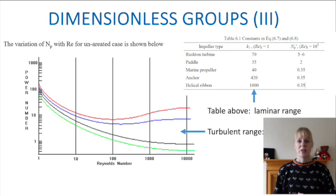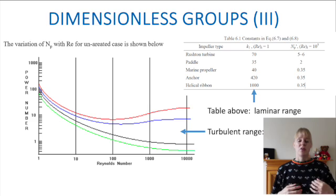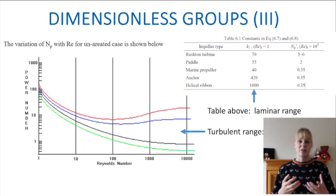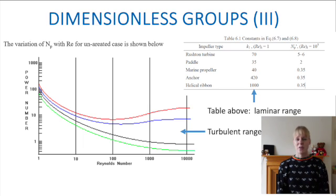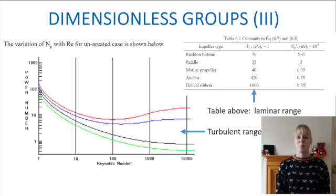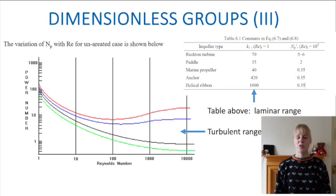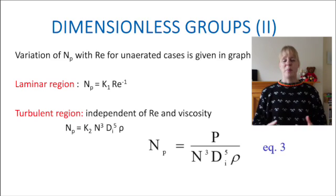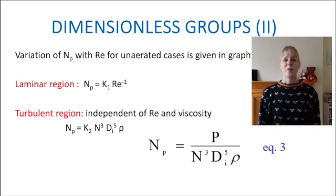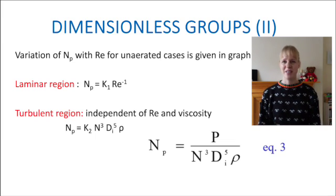The power number enables you to determine the oxygen transfer rate in your system and the oxygen uptake rate of your culture — essentially letting you calculate how many microorganisms you can have in your reactor, making it a key design parameter. In the laminar region the power number depends on a constant associated with the specific impeller. In the turbulent region, independent of Reynolds number and viscosity, you can use the power formula to work out the power needed to drive your impeller. NP (the power number, also written as P0 in literature) is a very important formula to remember.